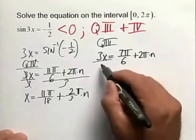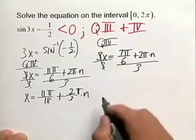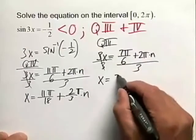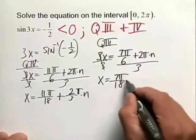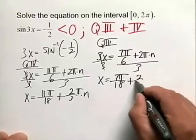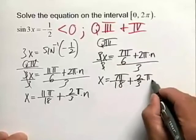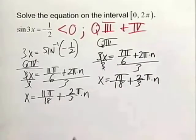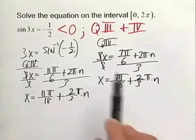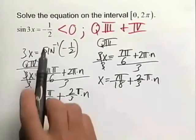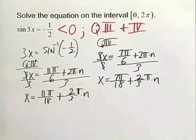As before, we divide both sides by 3. So from this, x is then equal to 7π/18ths plus 2/3 π times n. So these are the infinite number of solutions in both quadrants 3 and quadrant 4 that satisfy this trigonometric equation.